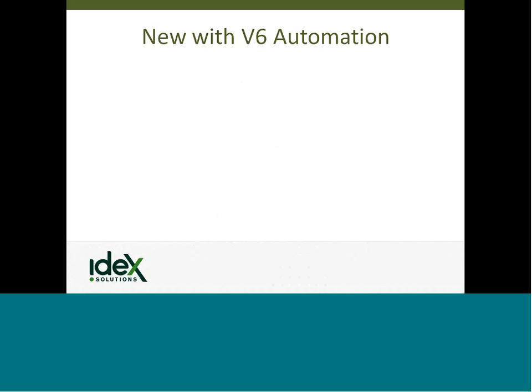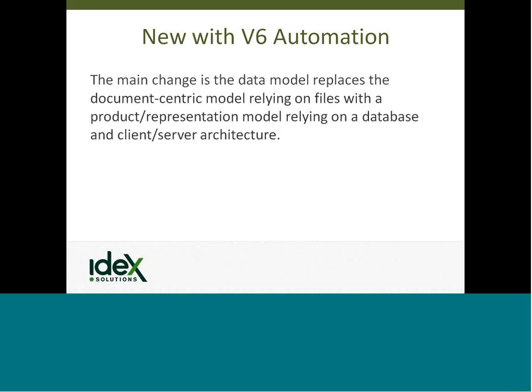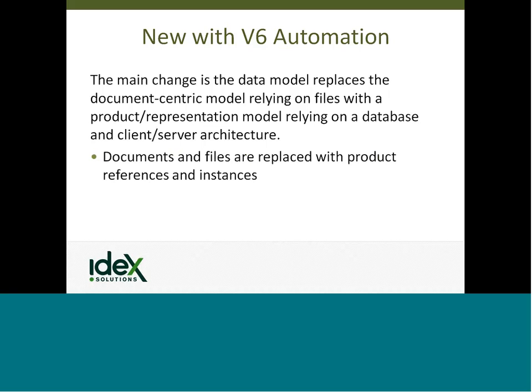Moving on, we're going to take a look at what's new in V6 automation. The main change is that within V5 our data model was document-centric. V6 now replaces that document-centric model, which relied on files in the operating system, with a product representation model relying on a database using a client-server architecture. We use the Enovia database — all of our data is accessed and read from the database, and when we've modified things we write them back. That includes the automation programs: once created, they exist inside of Enovia as well.